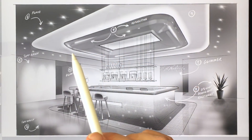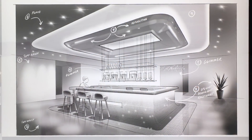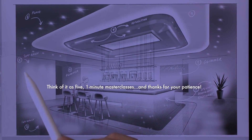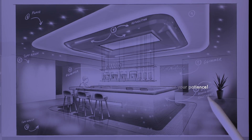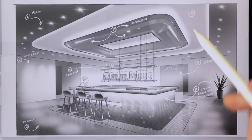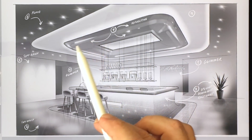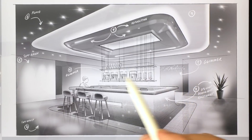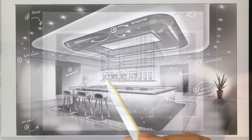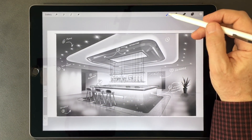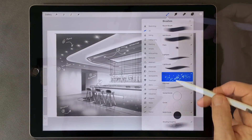Today I'm going to show you five simple lighting effects that I use all the time in my Procreate sketches: the flare, the soft brush technique, the up light or down light or back light technique, the reflection, and the glimmer effect. All of these are done very easily using five Procreate brushes.